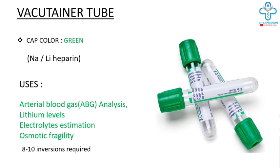The green color vacutainer tube contains sodium or lithium heparin. It is used for arterial blood gas analysis and lithium levels. Note: when using for lithium level detection, use sodium heparin as the anticoagulant. It is also used for osmotic fragility and electrolytes estimation. Eight to ten inversions are required.